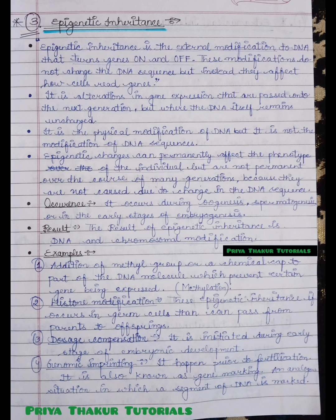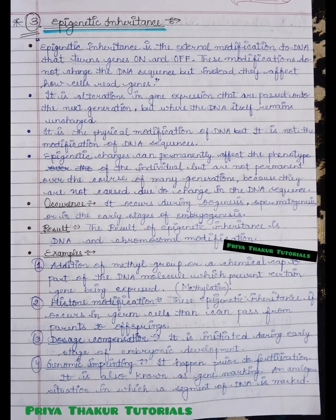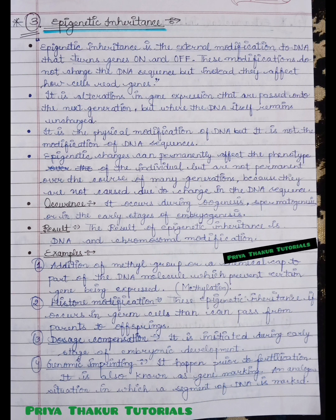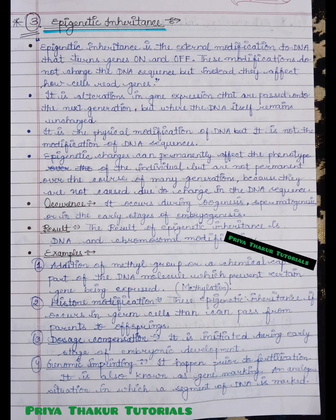The fourth example is genomic imprinting, which happens prior to fertilization. It is also known as gene marking — an analogous situation in which a segment of DNA is marked. These are the main examples of epigenetic inheritance, and this concludes our overview of the topic.